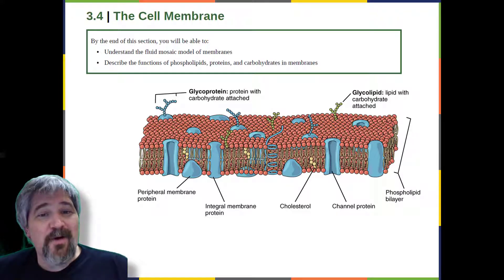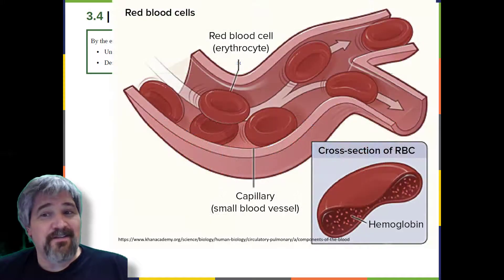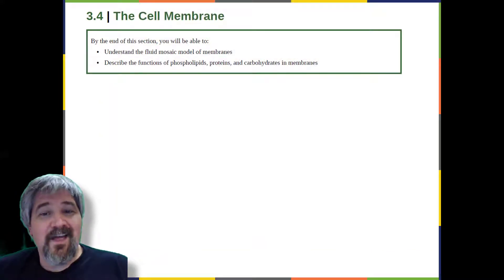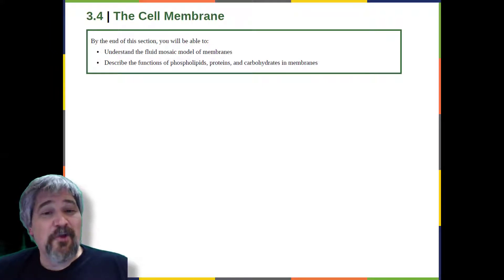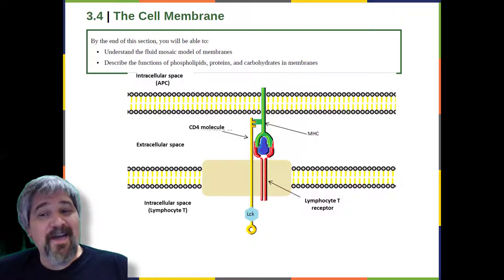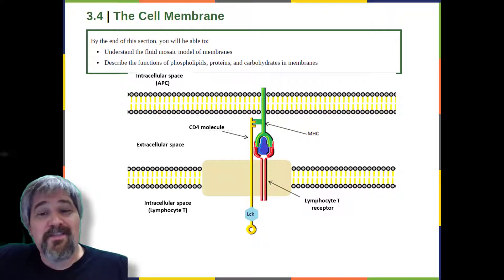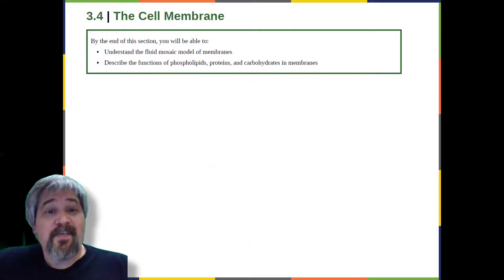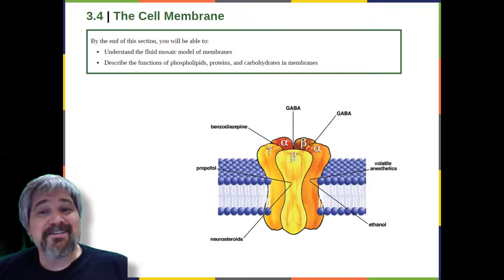The plasma membrane must be sufficiently flexible to allow certain cells, such as red blood cells and white blood cells, to change shape as they pass through narrow capillaries. In addition, the surface of the plasma membrane carries markers that allow cells to recognize one another, which is vital as tissues and organs form during early development. The plasma membrane also carries receptors, which are attachment sites for specific substances that interact with the cell.